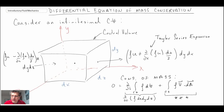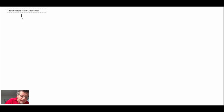We can replace that first term. For the second term we have to look at mass flux coming into and out of each of the surfaces in our little tiny cube. So let's take a look at the second term in our control volume equation, which was an integral over the control surfaces of rho v dot dA.